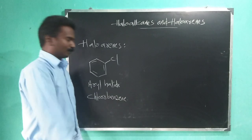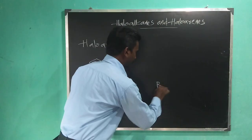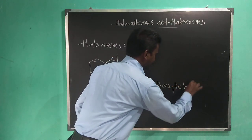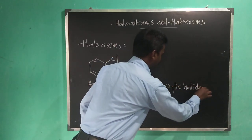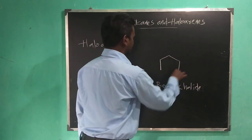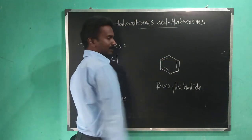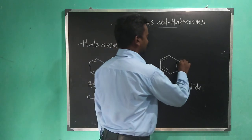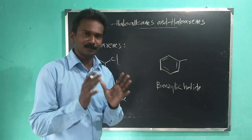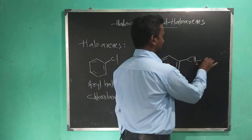We have one more type — that is benzyl halide. In benzyl halide, the benzene ring has a side chain, and the hydrogen atom in the side chain is replaced by a halogen atom.